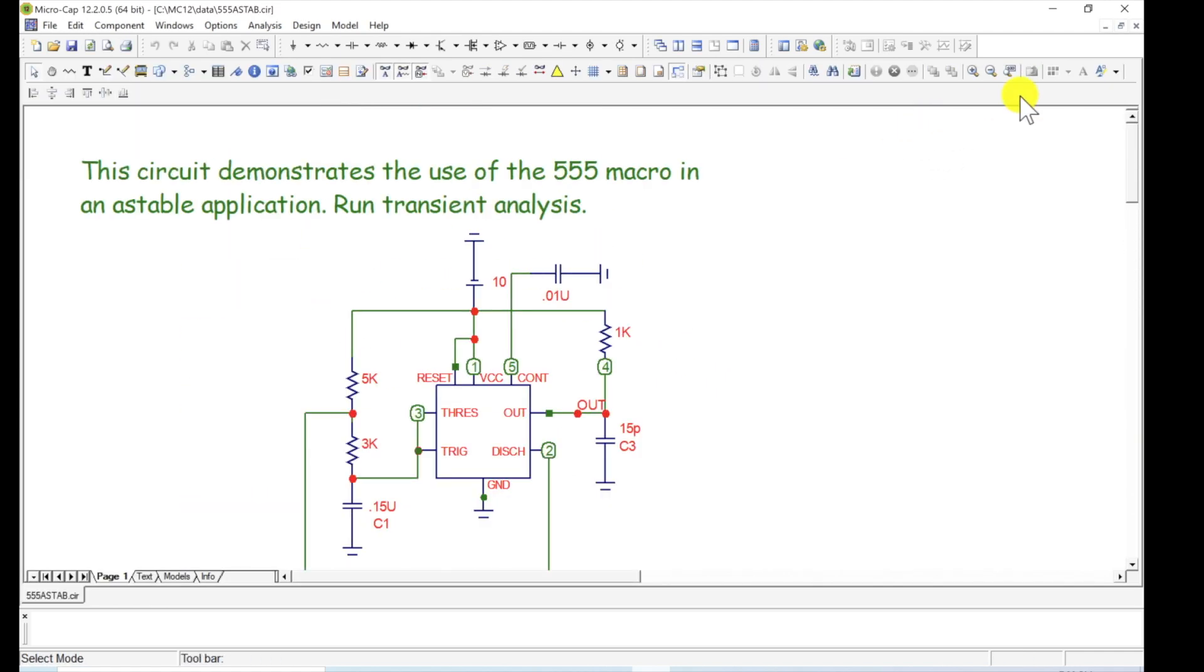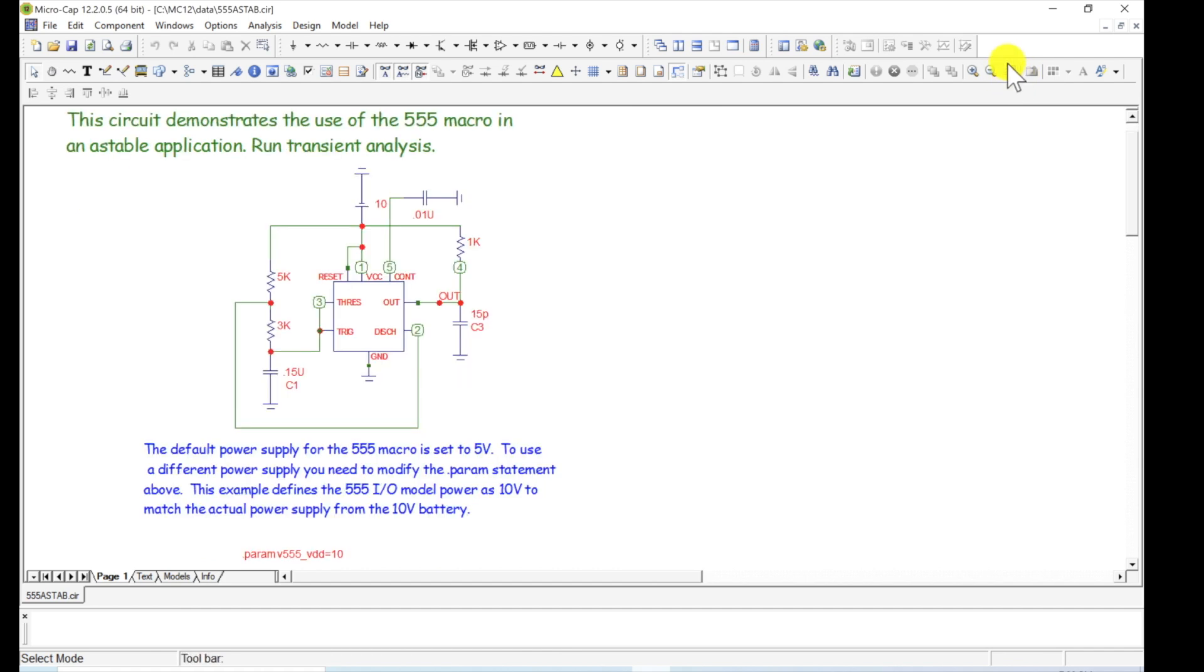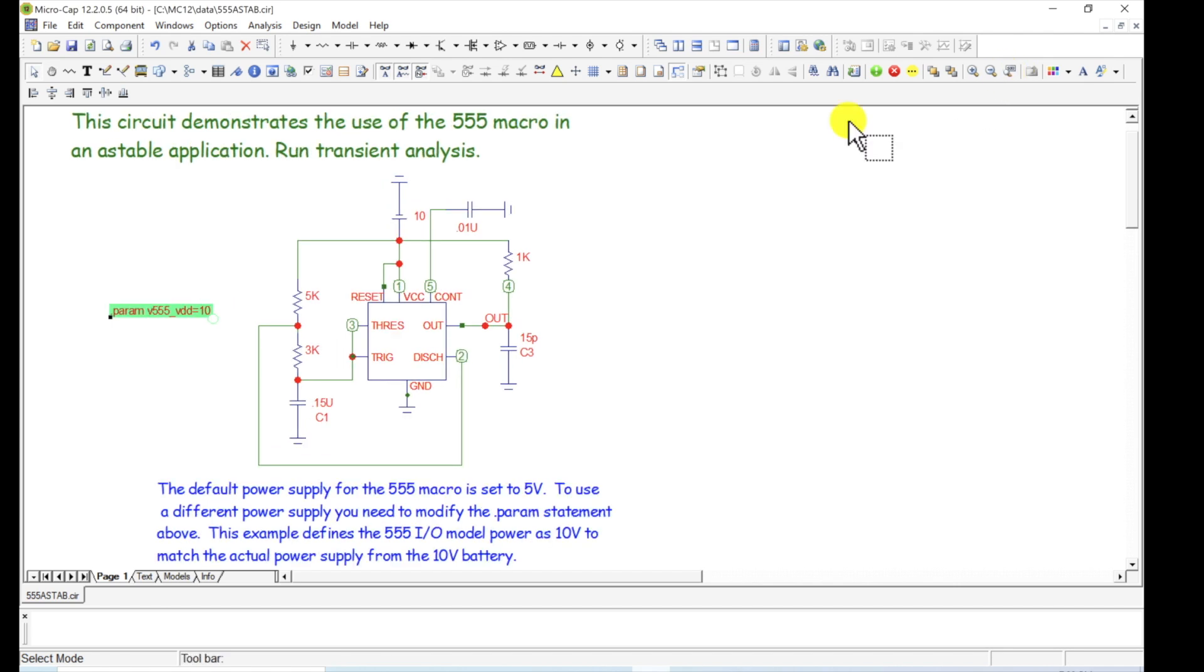Okay, there's the schematic. I can come up here, hit that button right up here and it sizes the window. We got this parameter statement. I'll move this up, resize the window so it'll get a little bit bigger. And this talks about this macro, this parameter statement is set up. The 555 macro is set to 5 volts, but this parameter statement is setting, we've got 10 volts here. So VDD is equal to 10 volts. And it's just modifying the model of the 555 to run on 10 volts instead of 5 volts.